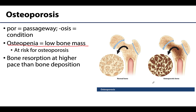Simply put, in an individual with osteoporosis, bone resorption — bone breakdown — occurs at a much faster pace than bone deposition. This is often due to the depletion of calcium in the body, with calcium being lost too quickly, sometimes through urine or sweat, compared to what is taken in by diet.